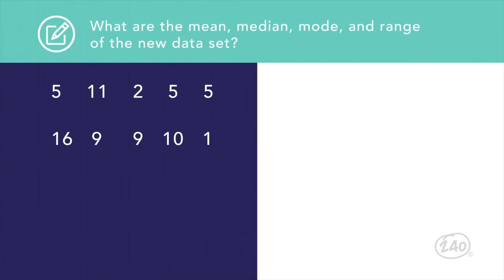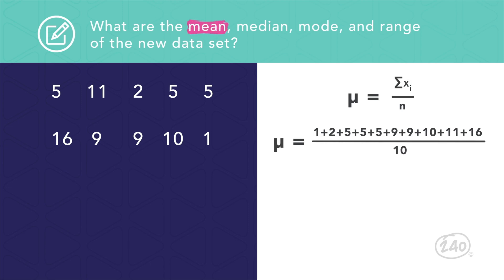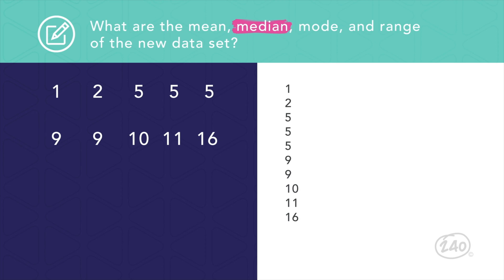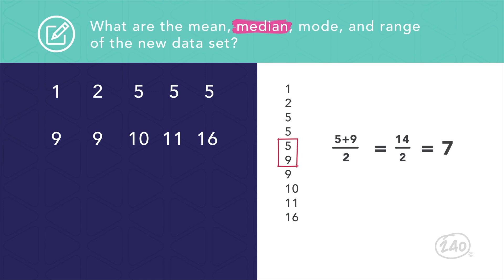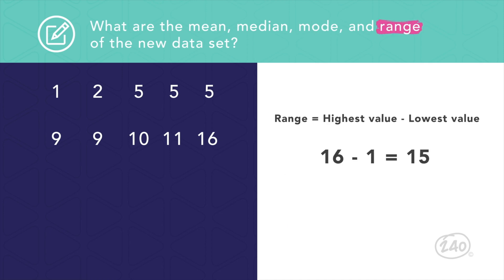Now let's look at a purely numerical example. Say we have the data set shown. The mean equals the sum of the terms divided by the number of data points. The sum is 73, divided by 10 data points, giving a mean of 7.3. For the median, put the data in order from least to greatest: 1, 2, 5, 5, 5, 9, 9, 10, 11, 16. With 10 data points, calculate the mean of the two middle values — 5 and 9 — giving a median of 7. Since there are three 5s and only one or two of each other value, the mode is 5. The range is 16 minus 1, which equals 15.